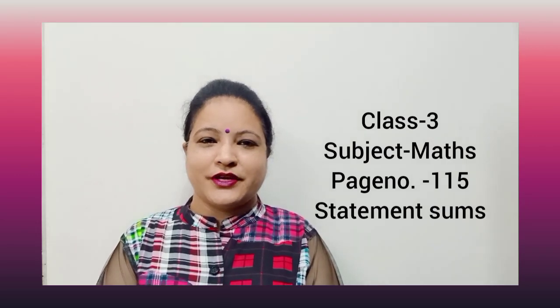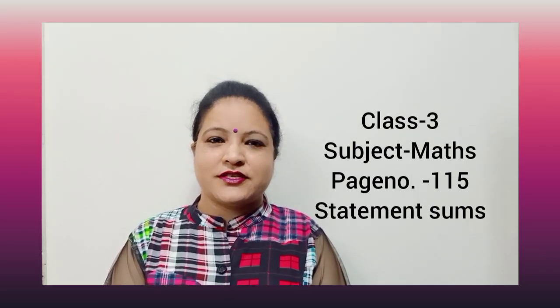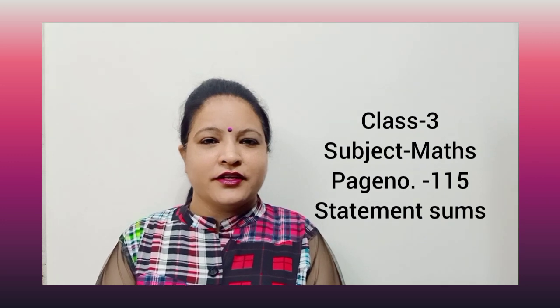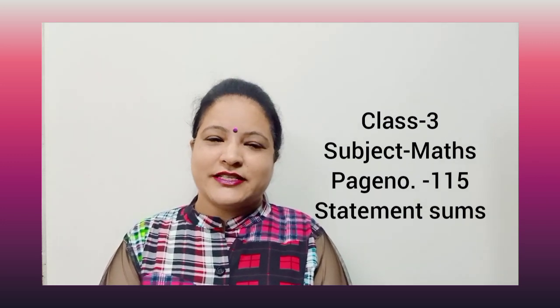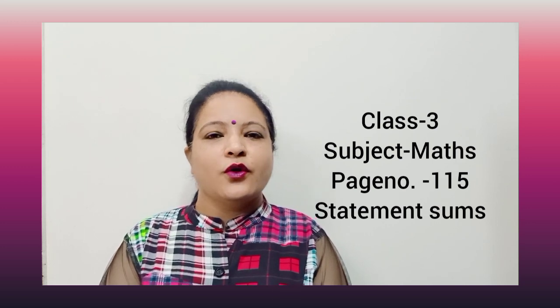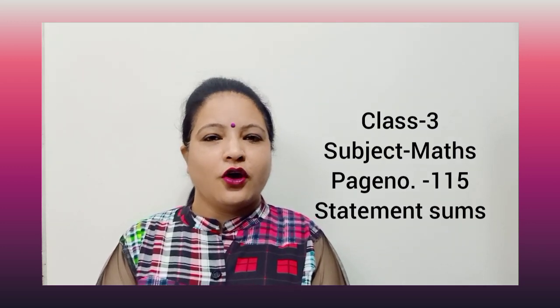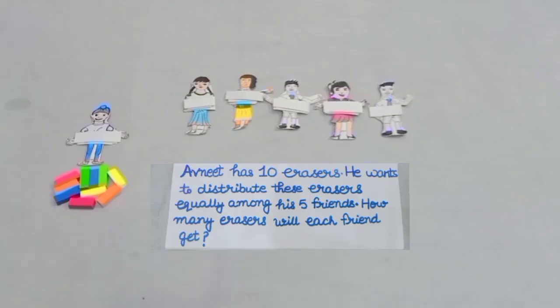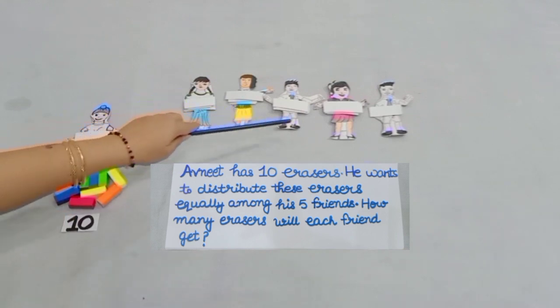Good morning students. Today we will learn how to solve statement sums given at page number 115 of your maths book, sum number two. Avneet has ten erasers. He wants to distribute these erasers equally among his five friends. How many erasers will each friend get?